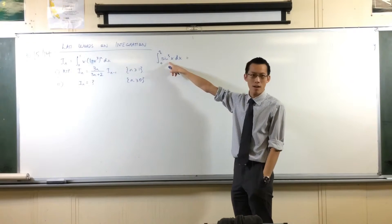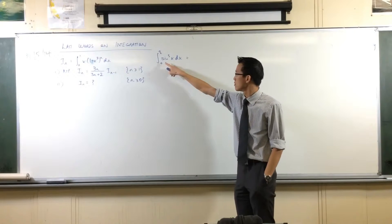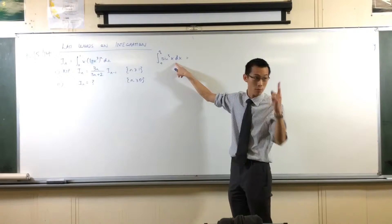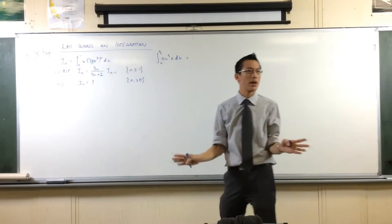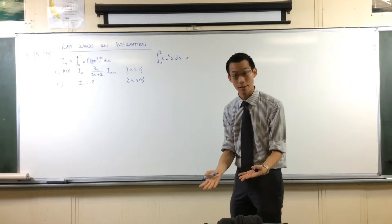Eventually, you'd get to some point where you don't need to worry about a recurrence relation anymore. You could evaluate I_1. The integral of sine x to the power of 1 from 0 to 2. That's fine. We don't need any fancy identities for that.